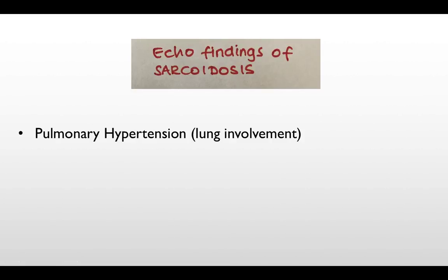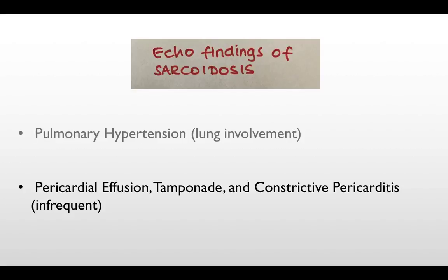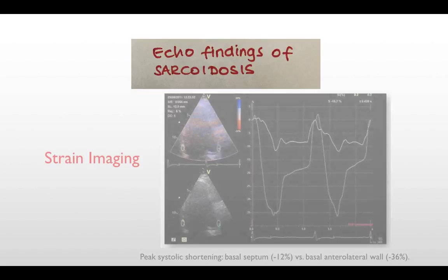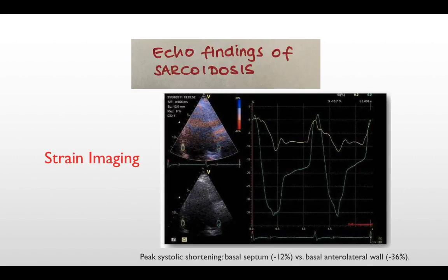Other features in patients with sarcoid heart include pulmonary hypertension due to lung involvement, which is quite expected, as well as less frequent findings like pericardial effusion, tamponade, and constrictive pericarditis.